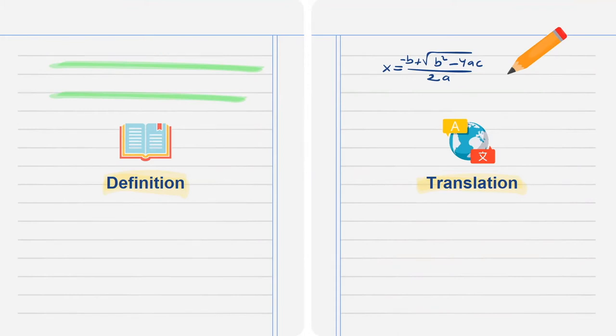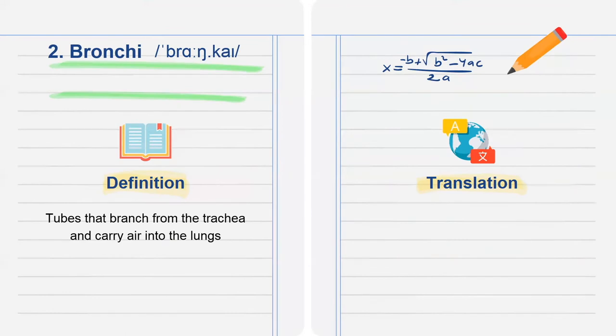The second word, bronchi, tubes that range from the trachea and carry air into the lungs.